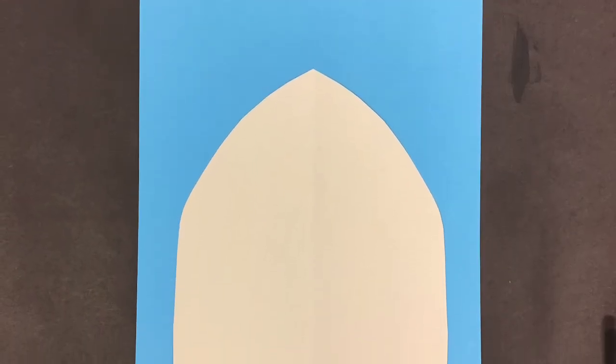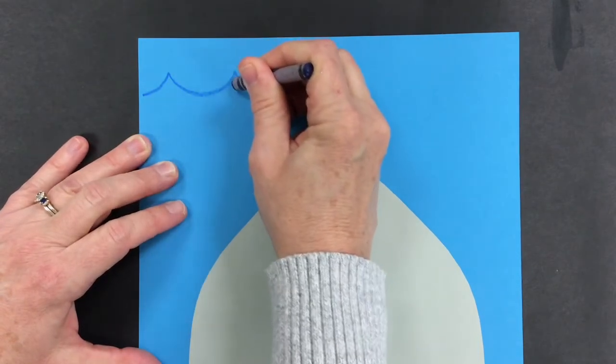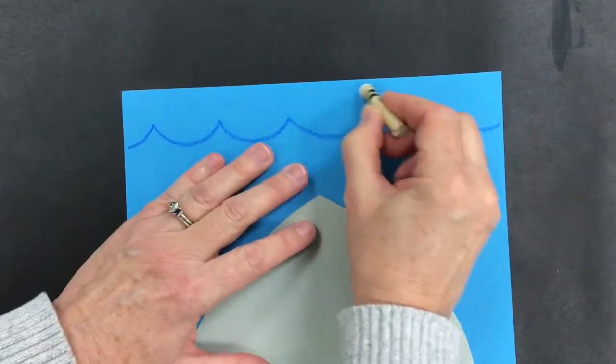Now your paper should look like this. Get your blue crayon, it doesn't matter which blue, dark or lighter, and we're gonna make little U shapes connected together to make it look like water at the top. Then I took my white and lightly colored the very top above my U shaped line, because I wanted my sky to be lighter than the water. It's really light but looks kind of cool. You can make yours lighter or darker, or even make clouds. It's up to you.